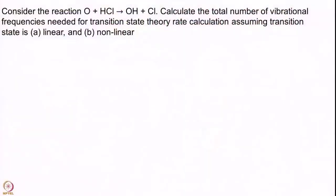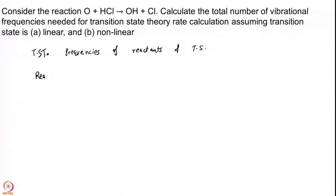Hopefully you are back. Let us solve this problem together. Remember that for transition state theory I need the frequencies of the reactants and the transition state — I do not worry about products. Reactants here: O is an atom and does not have frequencies — there is no vibration. HCl has one frequency: the stretch.